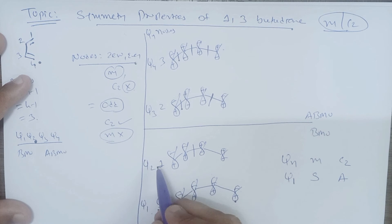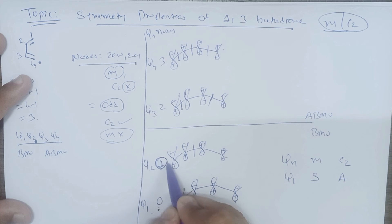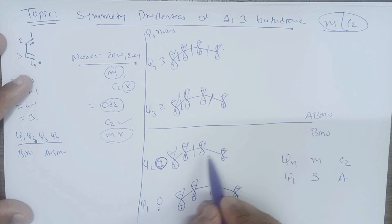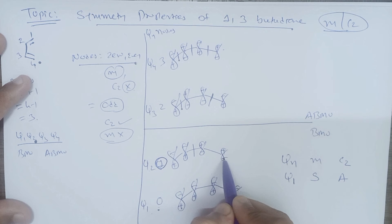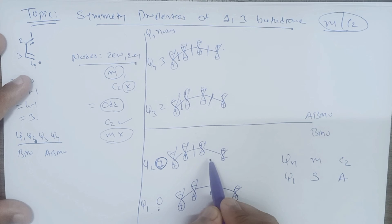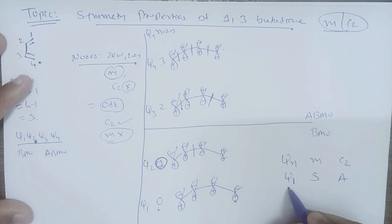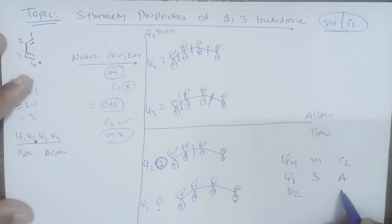Now looking at psi 2, this is having an odd number of nodes. Looking at the first and last signs: minus, plus on one end and plus, minus on the other. If we rotate by 180 degrees, we can say that psi 2 has a C2 axis and does not have a mirror plane.